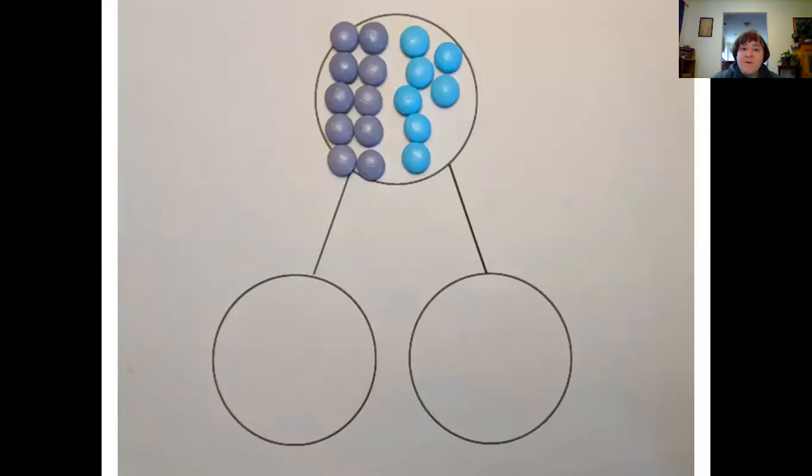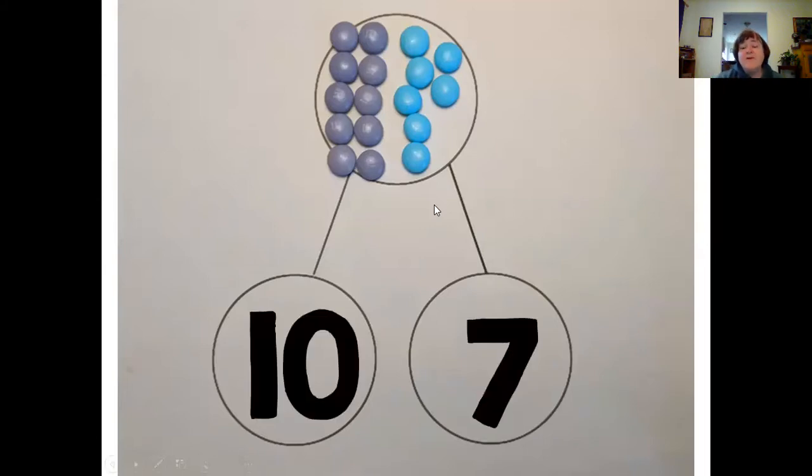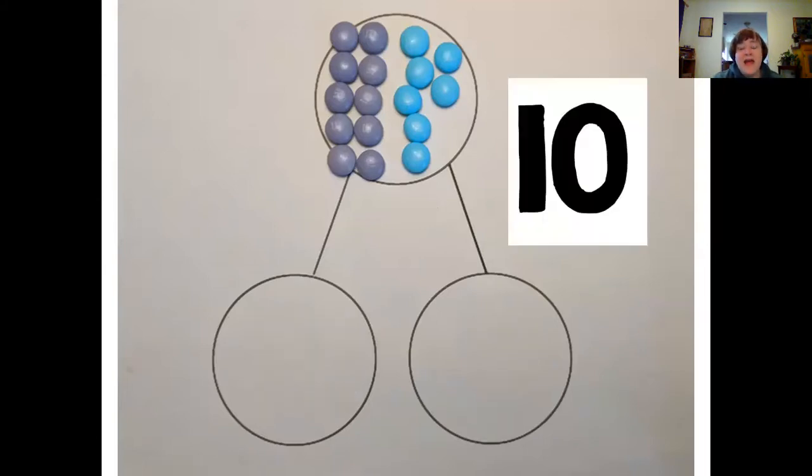One last example. I've got my 10 purple. How many do I have this time in blue? Looks like one, two, three, four, five, six, seven. So I fill in the bottom 10, seven. But when I hide that zero, it makes 17.